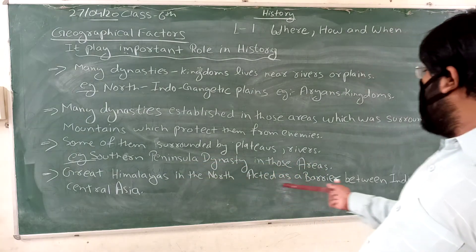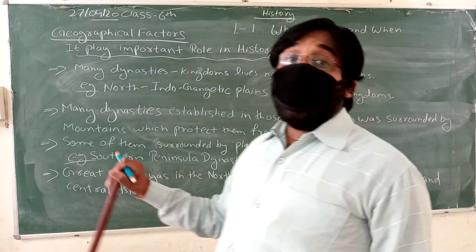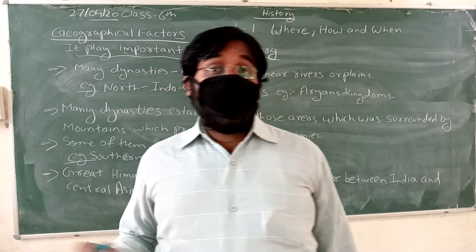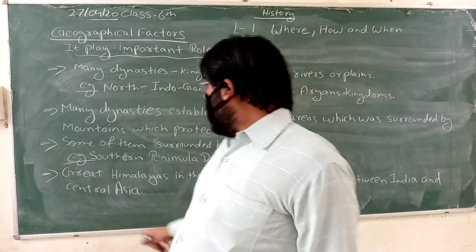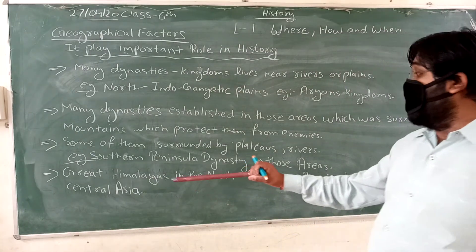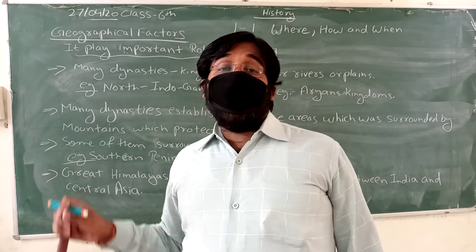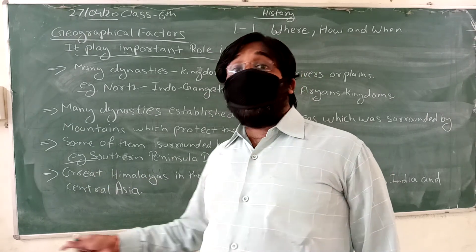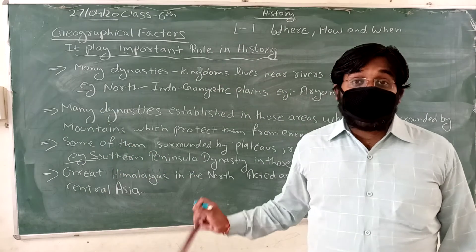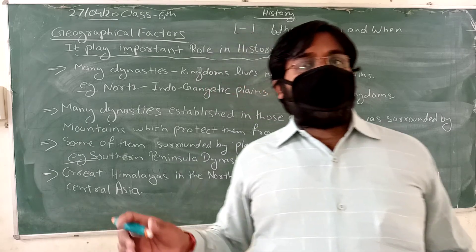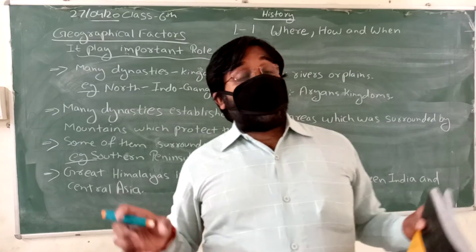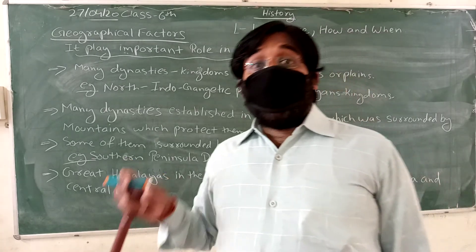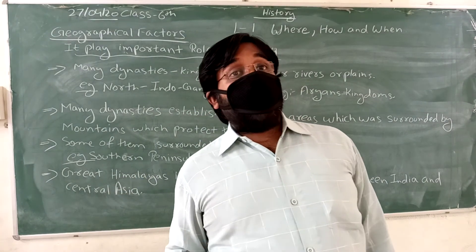Fourth, the great Himalayas in the north acted as a barrier between India and Central Asia. The great Himalayan range — the great chain of mountains — is called the Great Himalayas. If any country had such things, then any enemy would not easily be able to enter, or if there was any dynasty, they would be able to see and guard against threats.